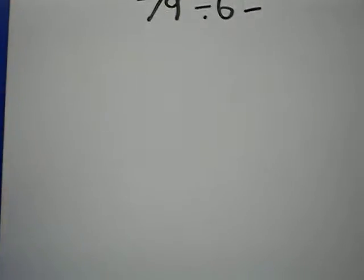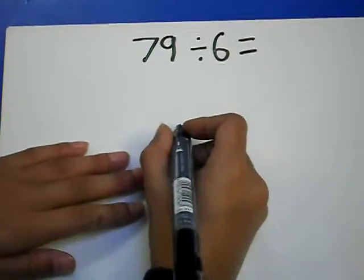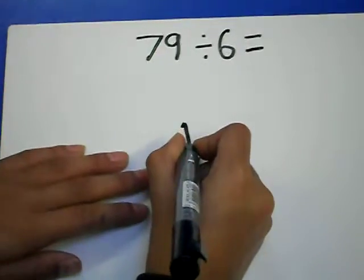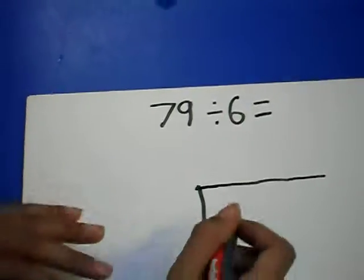I am going to tell you how to do 79 divided by 6 equals something. You have to put a line down and a line across. That's the bus stop.